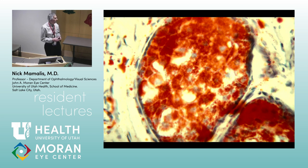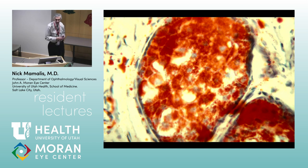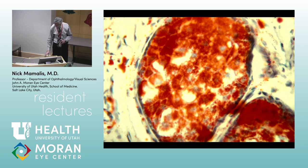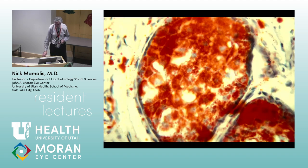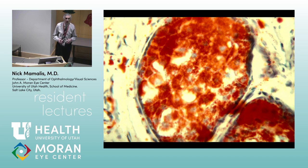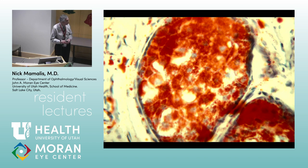What kind of stain is this? Oil Red O. Exactly — it stains lipid. It's a lipid stain, and it's easy to remember because it stains the oil in little round O's red.